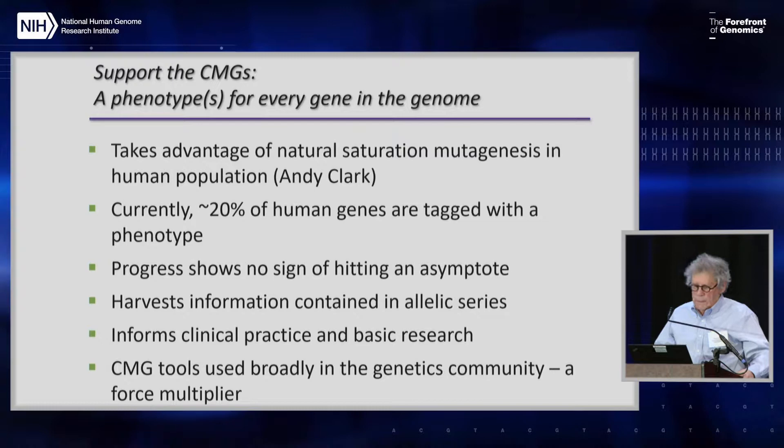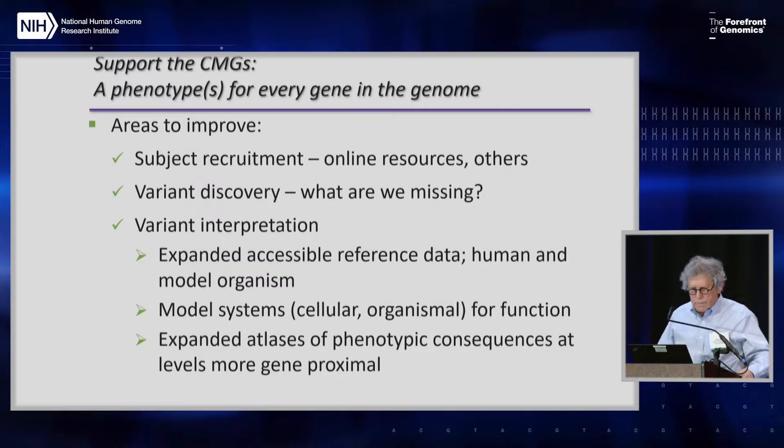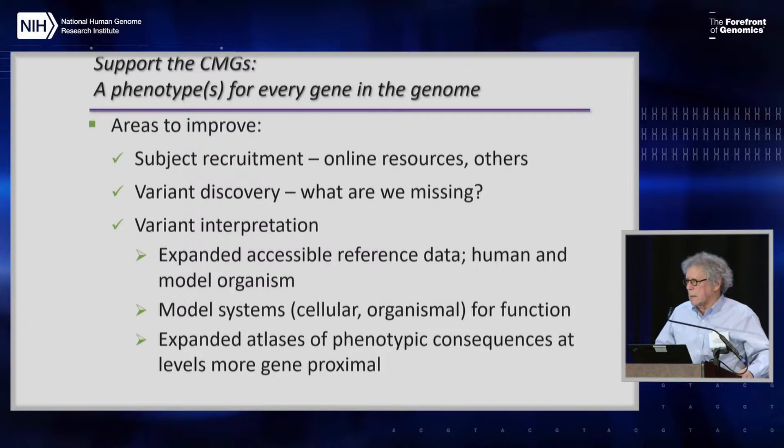The CMGs have built a collection of tools and made them freely available to the genetics community. In a way, this is a force multiplier for people who do not have CMG funding, but use these tools to promote their own efforts to find Mendelian disease genes. If we want to find a phenotype for every gene in the genome, we have to sample the population across the world, and that means robust subject recruitment and increasingly online resources and tools.